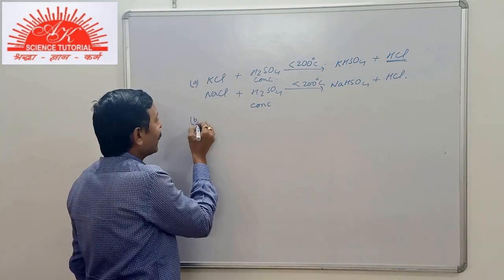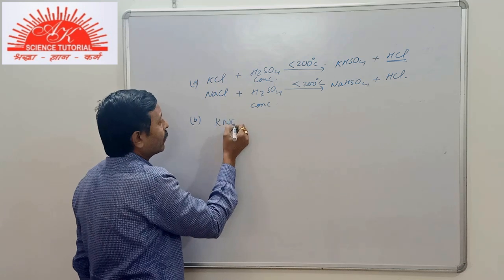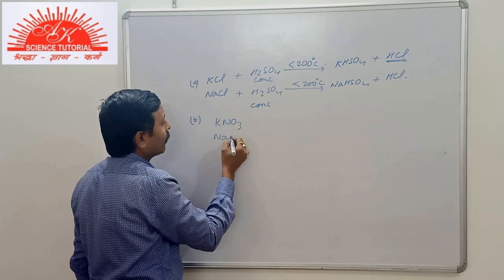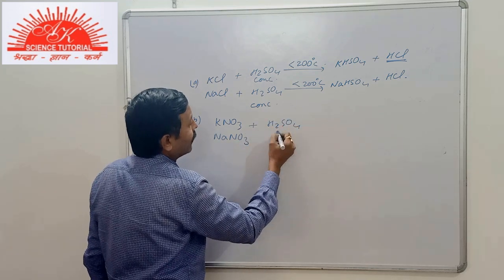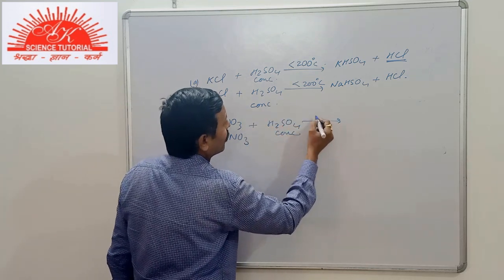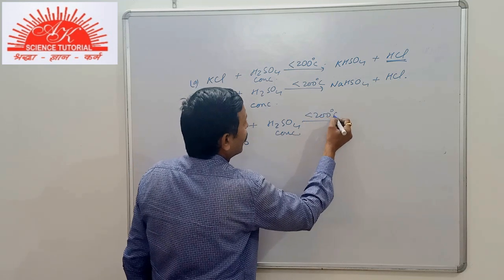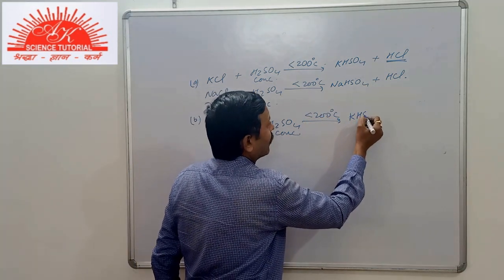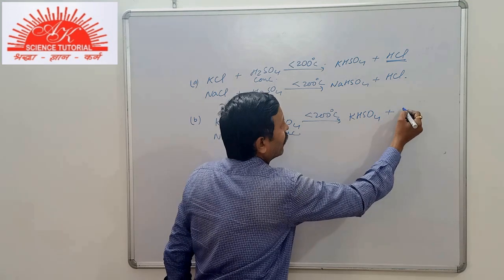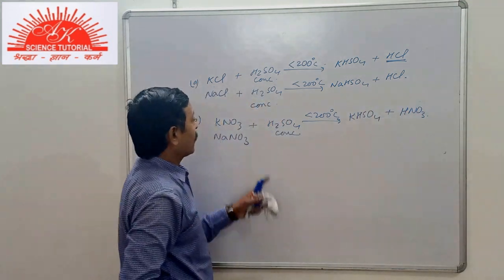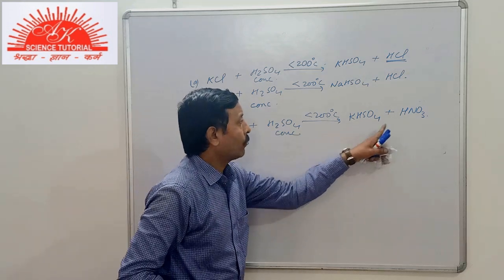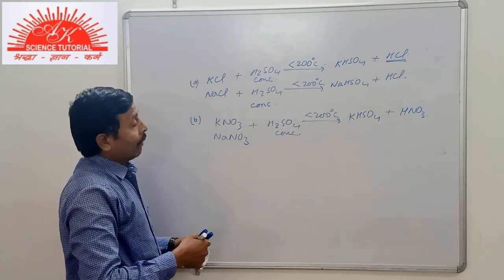Similarly, if we take nitrate salt and then again reacted in similar way, then you will get again bisulfate salt and nitric acid molecule. In this part also we will have KHSO4 and HNO3.